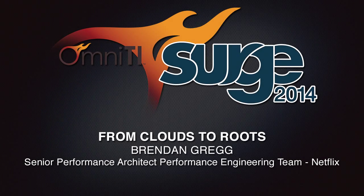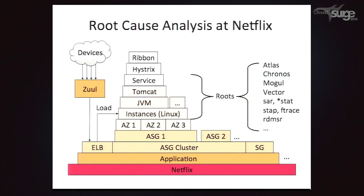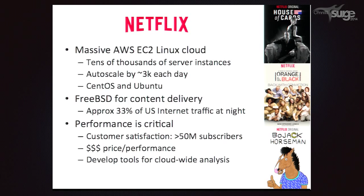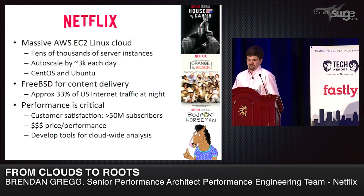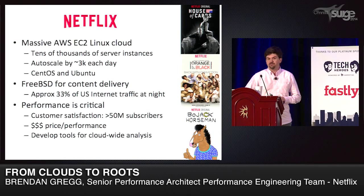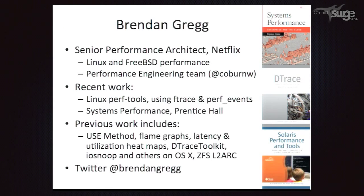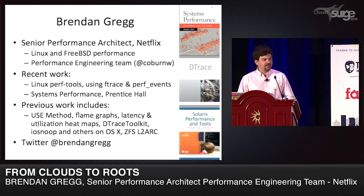Thanks for showing up. My talk is 'From Clouds to Roots.' I'm Brendan Gregg from Netflix, and I'm going to be talking about how we do root cause analysis. Netflix has a massive AWS EC2 cloud, often used as an example of using Amazon EC2. We have lots of Linux, CentOS and Ubuntu, and we also use FreeBSD for content delivery. We're reaching 33% of US internet traffic at night, so performance is critical. We have over 50 million subscribers, and performance very much matters to them and also for us in terms of cost.